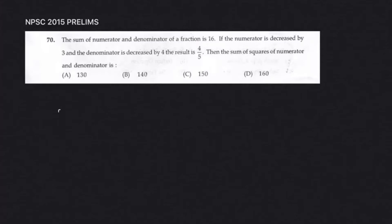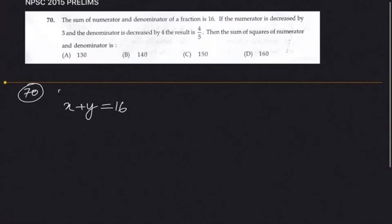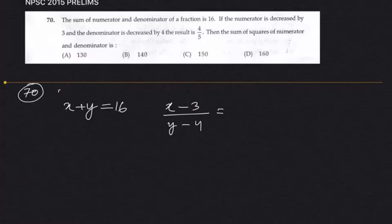We will further continue with the 2015 prelims PSC question paper. Let's start with question number 70. This is a fairly straightforward question: the sum of the numerator and denominator of a fraction is 16, so x plus y equals 16. If the numerator is decreased by 3 and the denominator is decreased by 4, the result is 4 by 5.